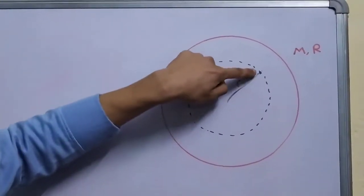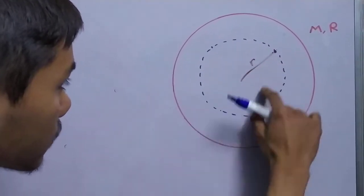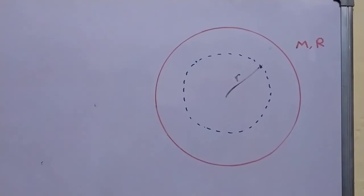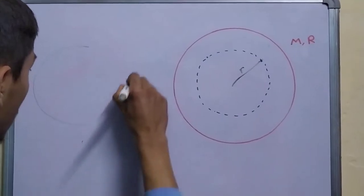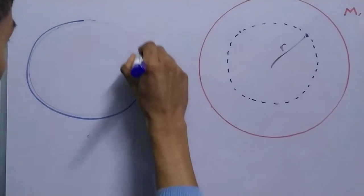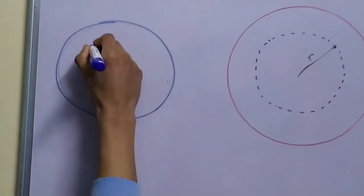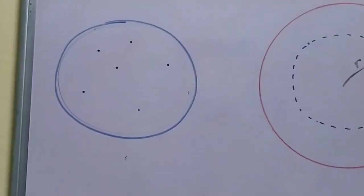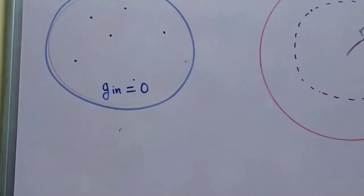We calculate the field at this point due to this thick shell and due to this solid sphere. We will be using a fact that I have shown in my previous videos that the field at any point inside this shell will be equal to 0. So G inside is equal to 0.